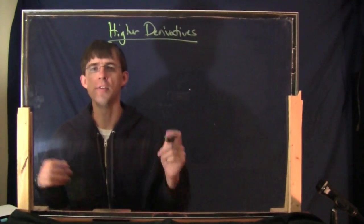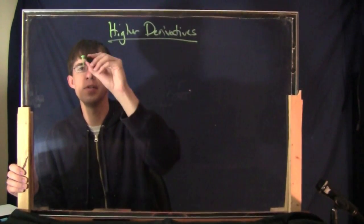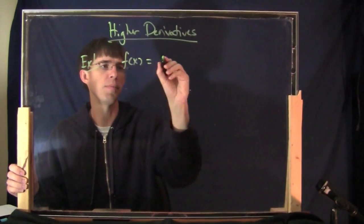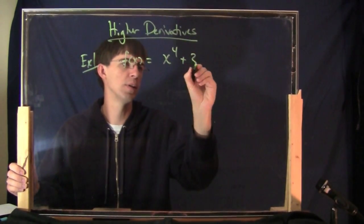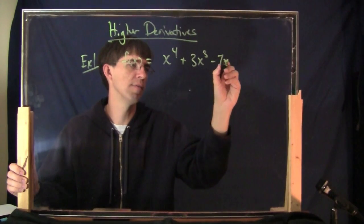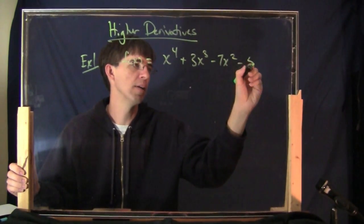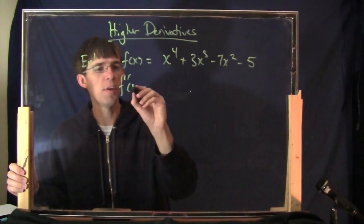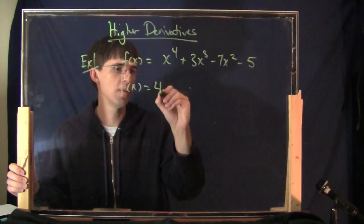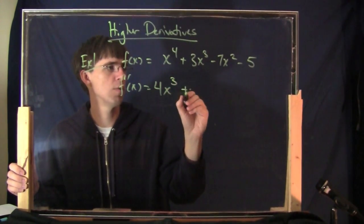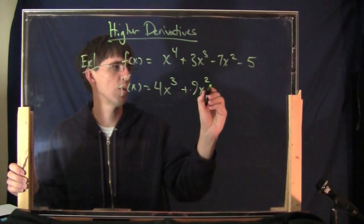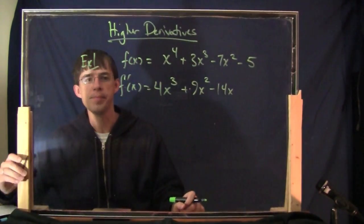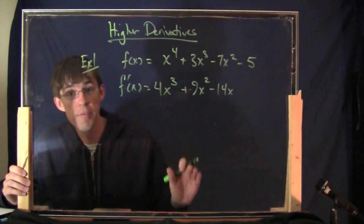They're not very hard to do. I think we can just do an example here. Let's say I begin with something like x to the 4 plus 3x cubed minus 7x squared minus 5. What is the derivative? This is easy: 4x cubed plus 9x squared minus 14x, and then that constant goes away. This is the first derivative.